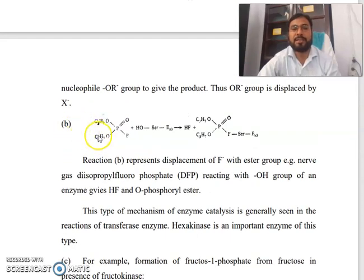Reaction B represents the displacement of F- with ester groups. For example, nerve gas diisopropyl fluorophosphate (DFP) reacting with the OH group of an enzyme gives HF and O-phosphoryl ester.